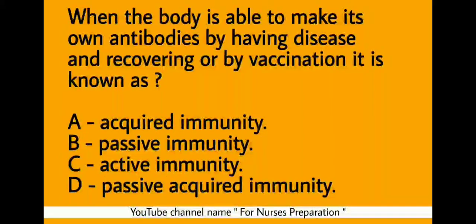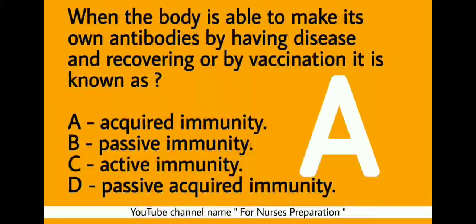Next Question. When the body is able to make its own antibodies by having a disease and recovering, or by vaccination, it is known as: Option A - Acquired Immunity. Option B - Passive Immunity. Option C - Active Immunity. Option D - Passive Acquired Immunity. Correct answer is Option A, Acquired Immunity.